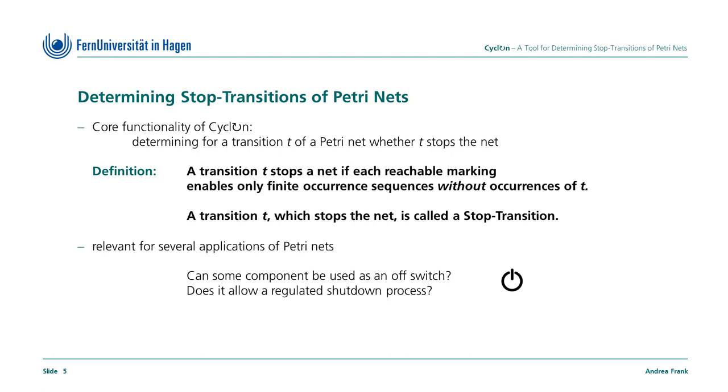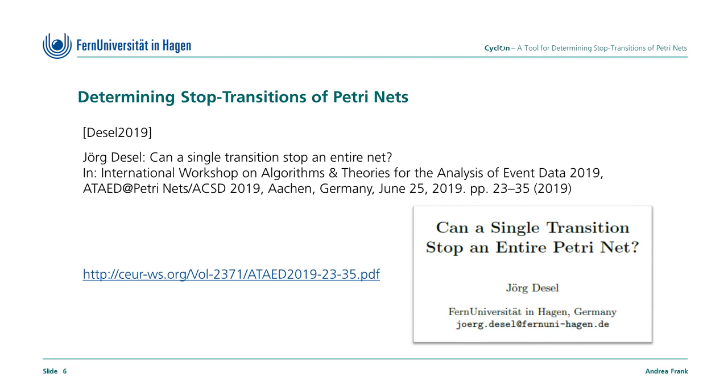The question whether or not a transition stops a net is relevant for several applications of Petri Nets. For example, let's apply this question to a robot. Then we ask, can some component modeled by a particular transition be used as an off switch? Or in other words, does it allow a regulated shutdown process? The problem of stop transitions has originally been introduced and discussed by Jörg Desel in a previous paper. This paper, Can a single transition stop an entire Petri Net?, was published in the context of ATAET 2019.